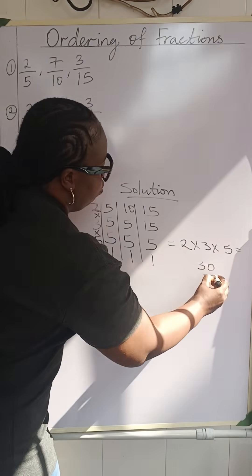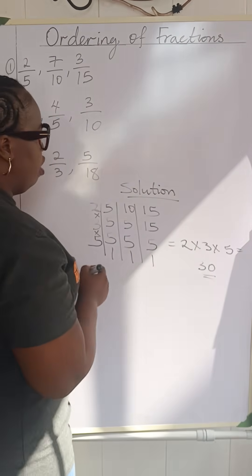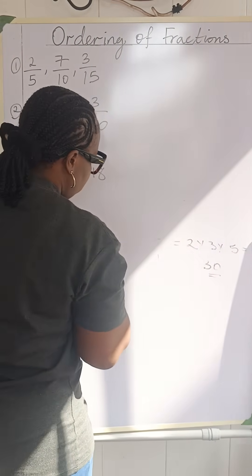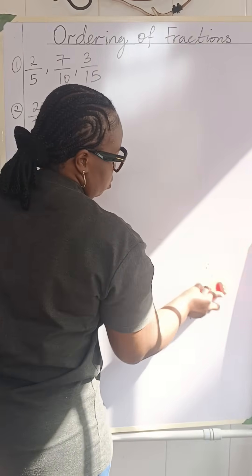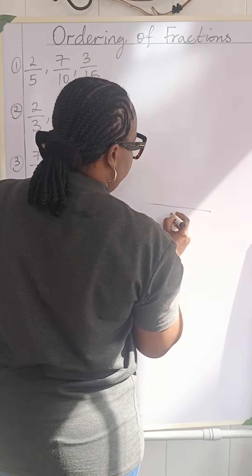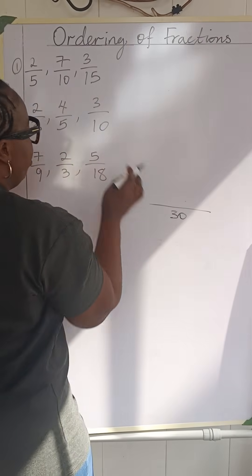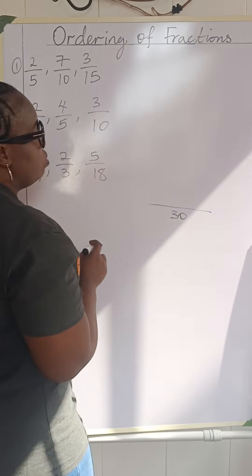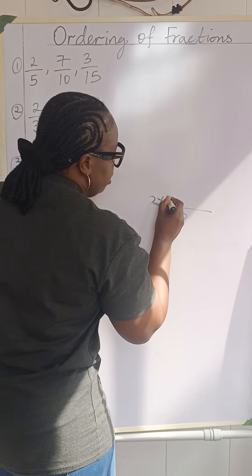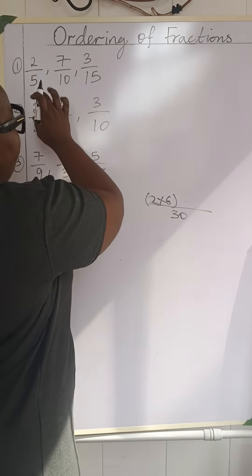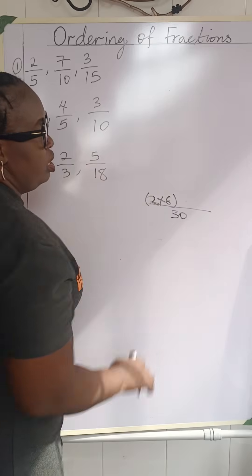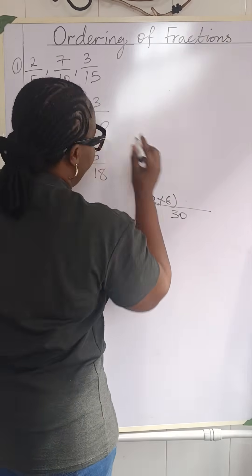The common denominator is 30. So we are going to have 30 as our common denominator. Five going into 30 is 6 times, so we have 2 times 6 for the first fraction. For the second one: 10 going into 30 is 3 times, so we have 7 times 3. That gives us 3 times 7.